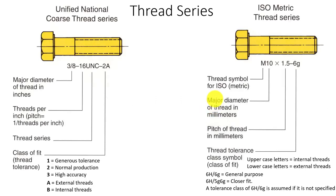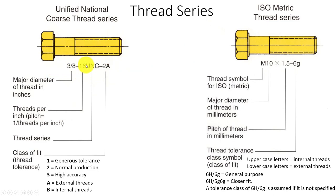Let's talk about fasteners real quick - a quick understanding of what the description of a fastener is. You're going to be working with the UN and SAE designations for fasteners versus the metric. In the English system, we're going to have something called 3/8ths, which is the nominal dimension - not held to a tolerance, just a nominal, thereabouts.